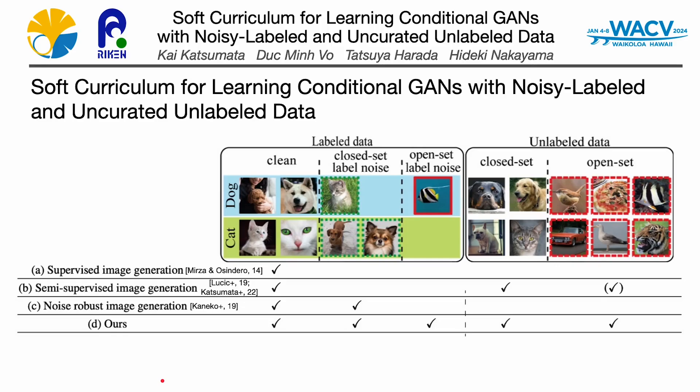Another research direction for data-efficient conditional image generation is noise-robust image generation. These approaches allow us to utilize roughly labeled datasets. RCGAN simulates the noisy-labeled distribution of the given dataset using the label transition function. However, these aforementioned approaches have some limitations. Semi-supervised approaches require clean labeled data, and training on noisy-labeled instances makes a classifier that assigns bad labels to unlabeled data. Noise-robust approaches only assume in-distribution label noise and do not support partially labeled datasets. To overcome these limitations, we introduce an overarching framework consisting of five kinds of data.